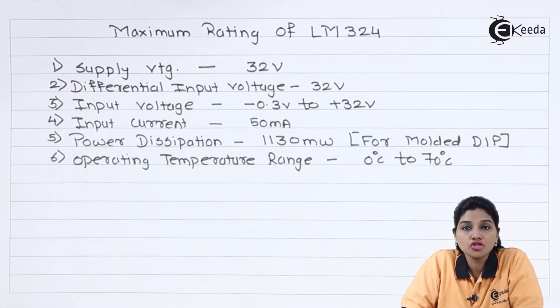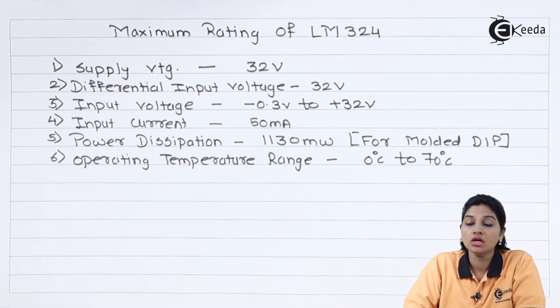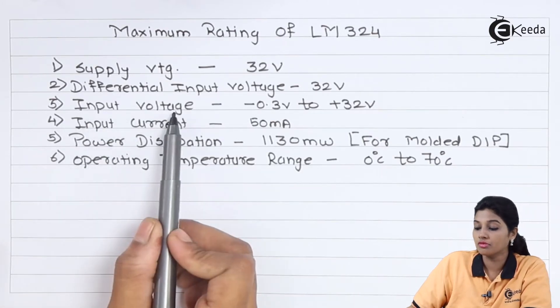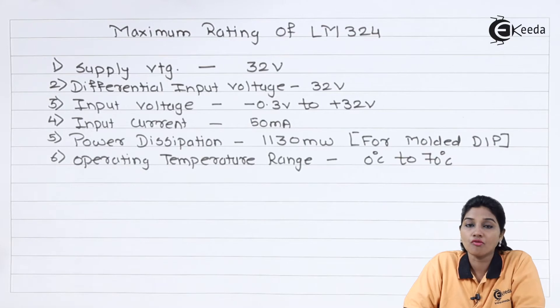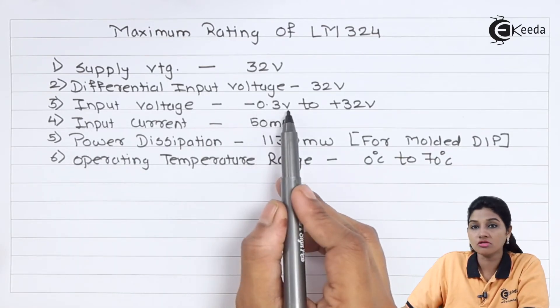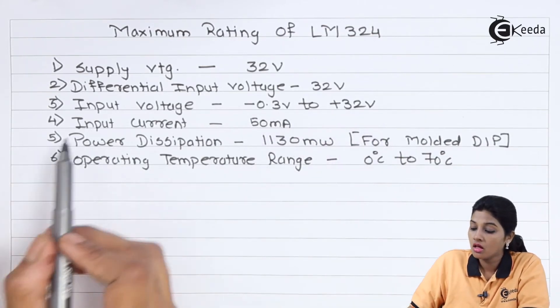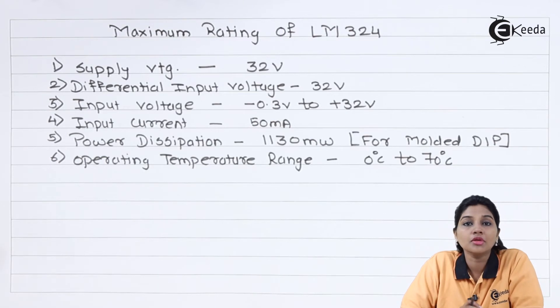So maximum differential voltage that can be provided by LM324 is 32V. The third rating is input voltage and that varies from minus 0.3V to plus 32V. Next the input current that can be provided to inverting and non-inverting terminal of the op-amp is 50mA.